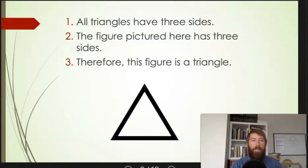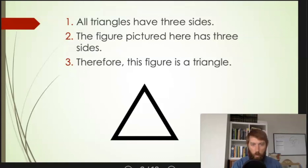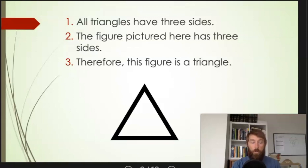Here's an example of a deductive argument. Premises 1 and 2 give support for the conclusion by giving logically conclusive support — that means 100% guaranteed support. If it's true that all triangles have three sides and the figure pictured here has three sides, then it has got to be true that the figure is a triangle. There's no way for this conclusion to turn out to be false. It's just got to be true.